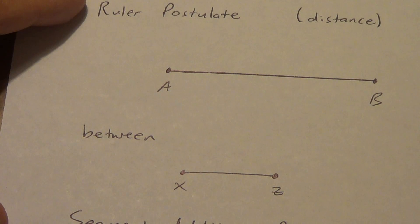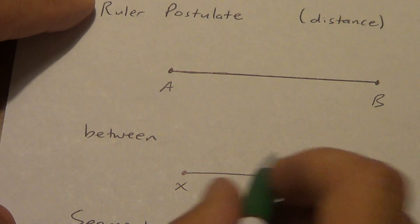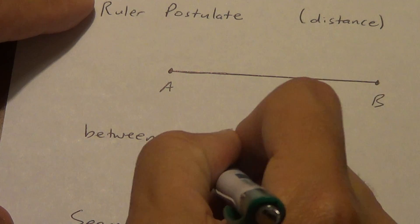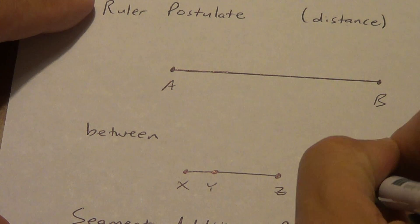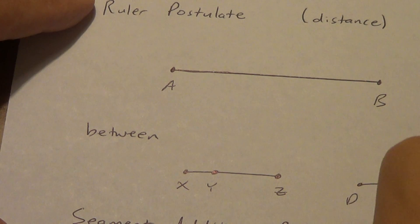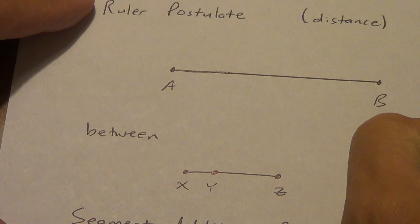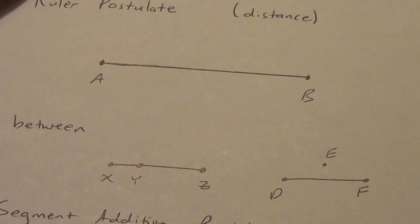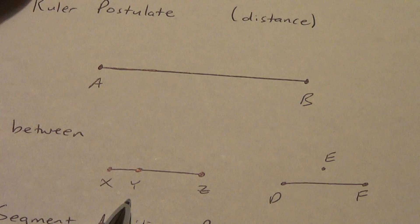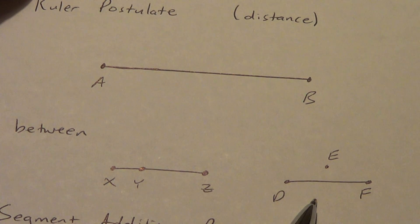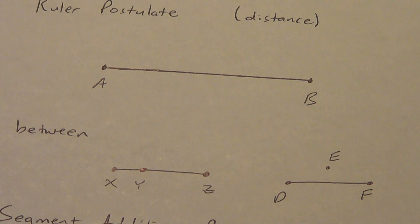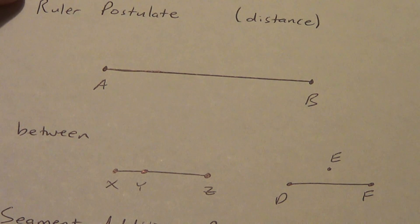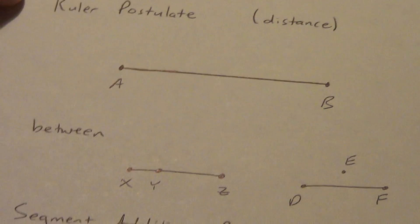We talked about collinear back in the last lesson. If Y is between X and Z, Y has to be on the same line, just somewhere in between them. If I have points D, E, and F in a triangle shape, E is not between D and F because they are not all three collinear. Between implies all three points are on the same line.